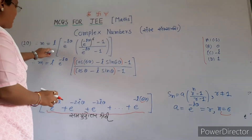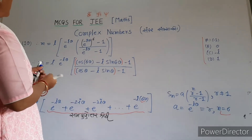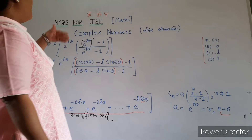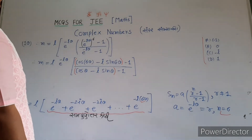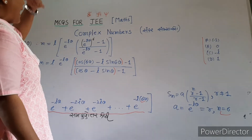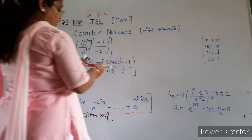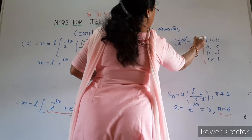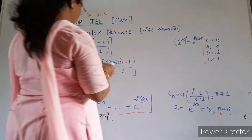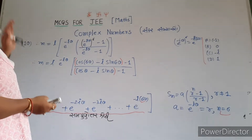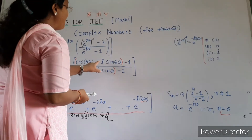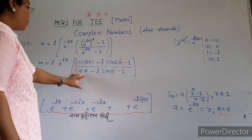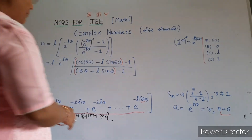This is a geometric series (samhanthas / GP). The GP sum formula is: S_n = A · (r^n − 1) / (r − 1), where r is not equal to 1. Here the first term A equals e raised to minus iθ, r equals e raised to minus iθ, and n equals 6. So m equals i · e raised to minus iθ · [(e raised to minus iθ)^6 − 1] / [e raised to minus iθ − 1].